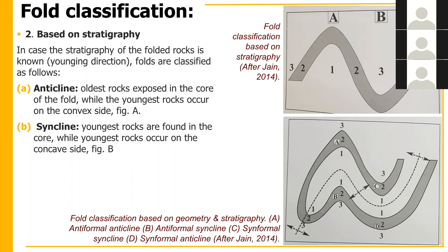For syncline, see figure B: bed number 3 is in the core, and bed number 1 is on the concave side. So youngest rocks are found in the core, and oldest rocks occur on the concave side. Note: there is a typo in the PPT on this point, please ignore it.